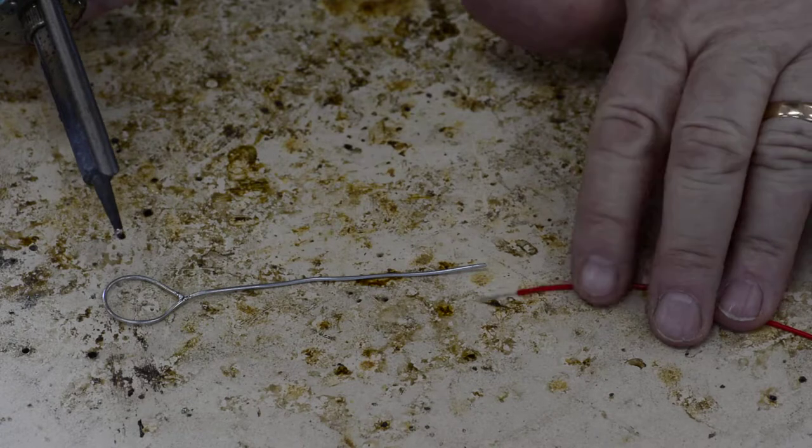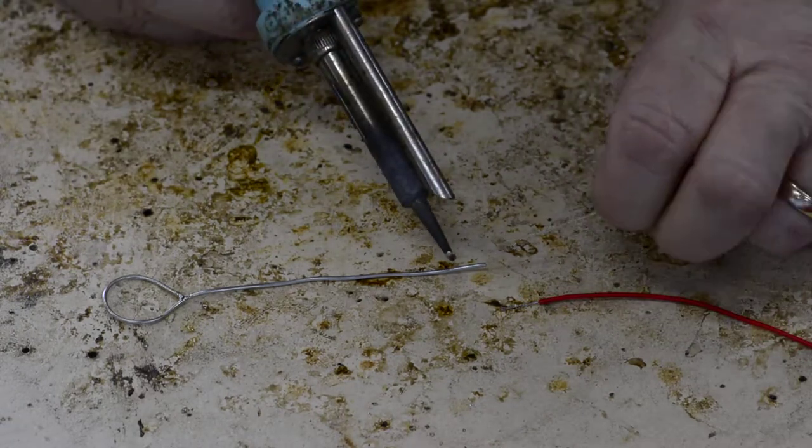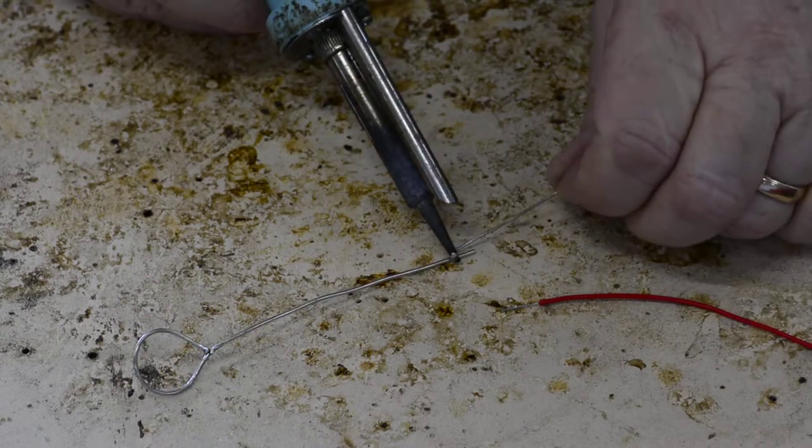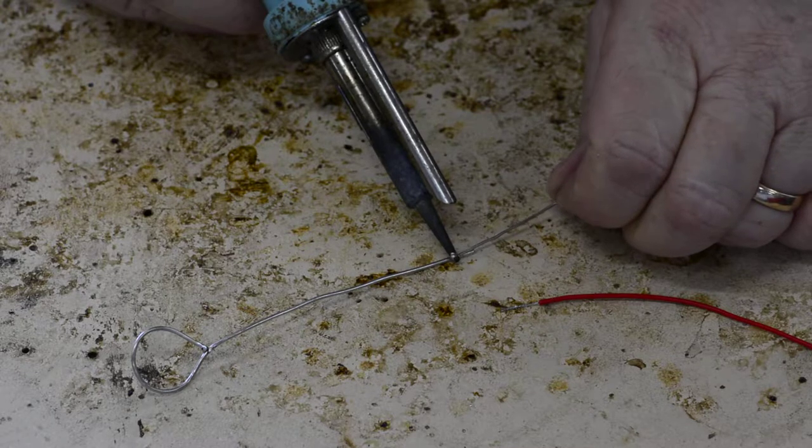Onto that slightly longer piece of wire that you've already tinned. So we need to tin the end of this wire first. Keep that up and get some solder to run.